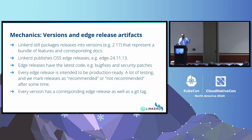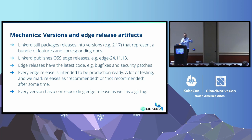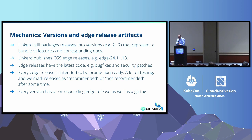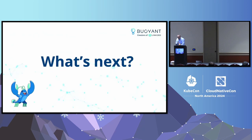When we talk about a specific version like 2.17, we'll say that corresponds to a specific edge release and we'll tag it. So if you want to get Linkerd 2.17, you know exactly where to get it.